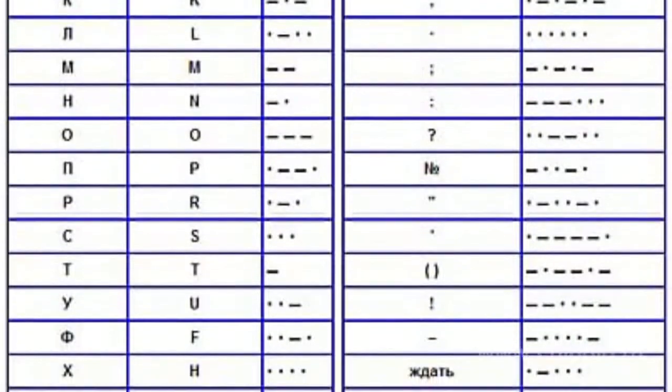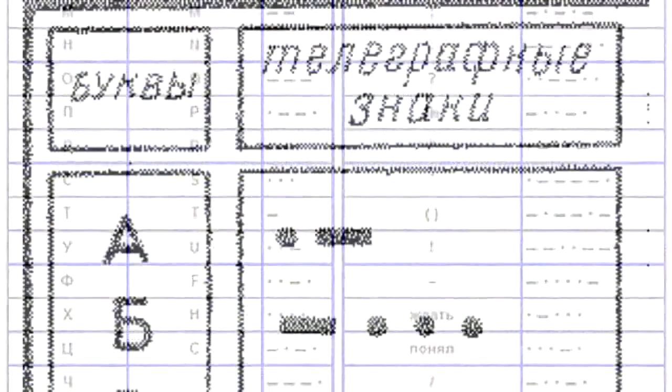Each letter of the alphabet consisted of a specific set of dots and dashes. For example, the letter A was denoted by the dot-dash combination, and the letter B by dash-dot-dot-dot. The digital signal is based on a very similar principle of information coding, but uses different bits of information.